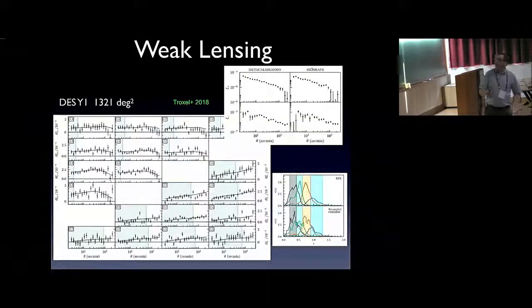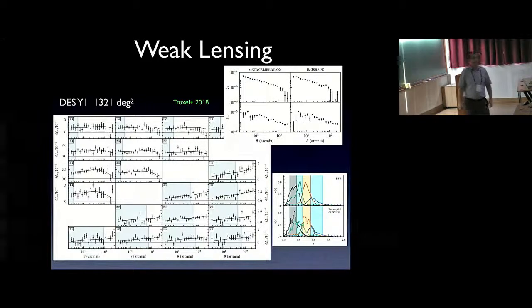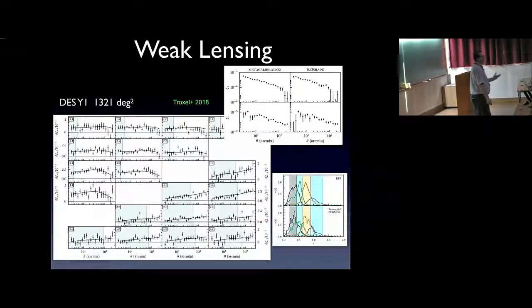We can do even further to extract more cosmological information. We can separate the galaxies into different redshift bins using the photometric redshift afforded by the five bands of the survey. For example, one can separate the galaxies in these four different bins. Then we can make, effectively, four maps, and we can cross-correlate these four maps with themselves or cross-correlate the different maps together.